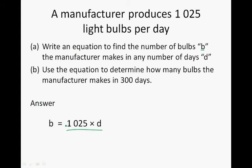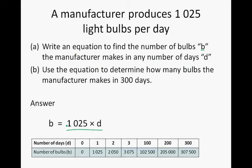Now, using this equation, we can set up a table. If the manufacturer doesn't work at all, so on day 0, there is going to be no light bulbs. Or we can do it algebraically. If on your calculator you type in 1,025 multiplied by 0, you will see it will give you 0. If on day 1, the manufacturer would have manufactured 1,025 light bulbs. On day 2, 2,050. On day 3, 3,075.